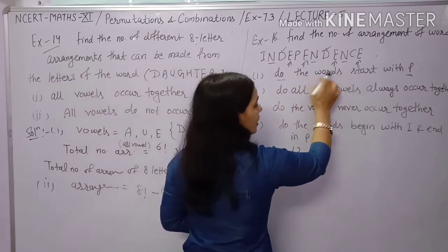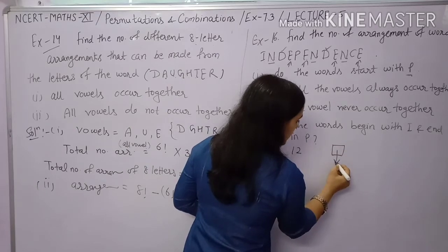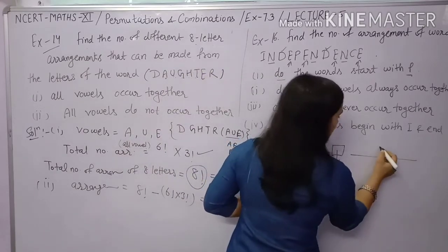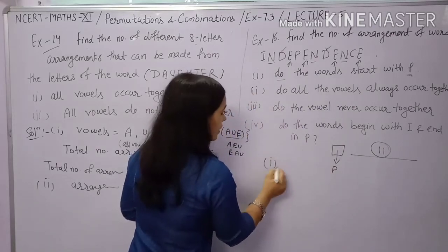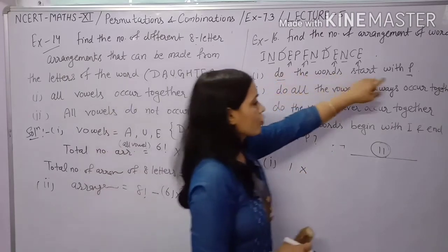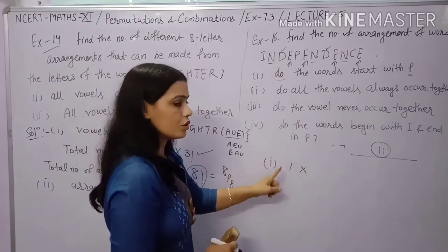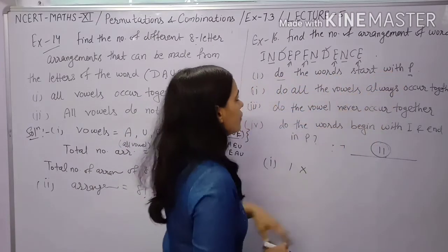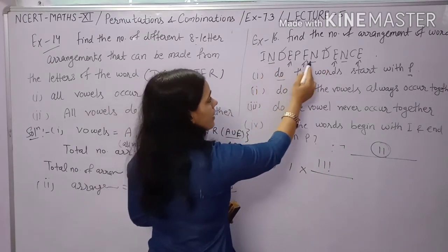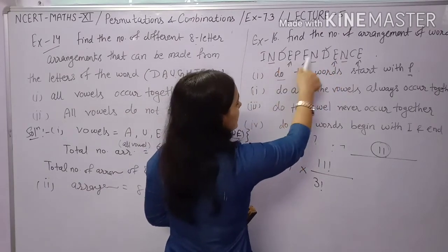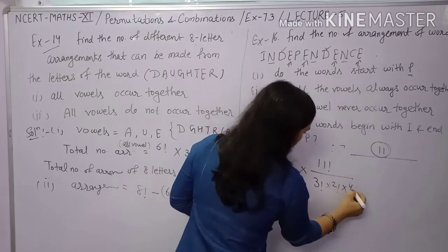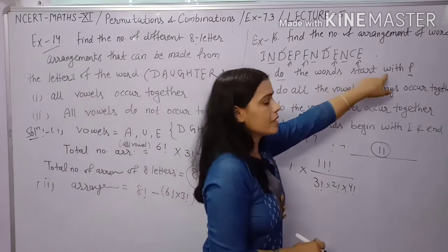First condition: word starts with P. Fix P at first place (1 way). Remaining 11 letters have N×3, D×2, E×4. Arrangements = 11! / (3! × 2! × 4!). Total = 1 × 11! / (3! × 2! × 4!).